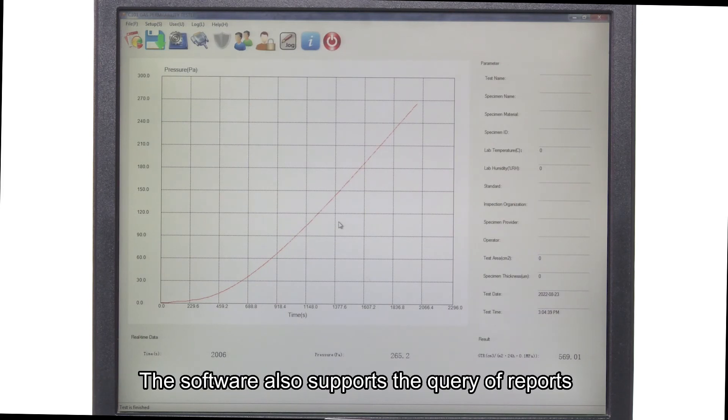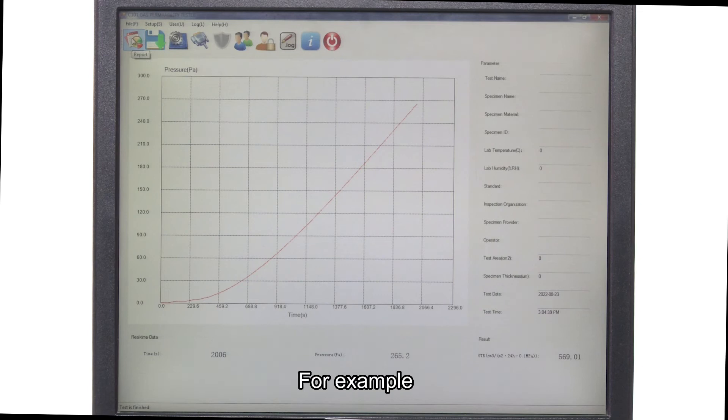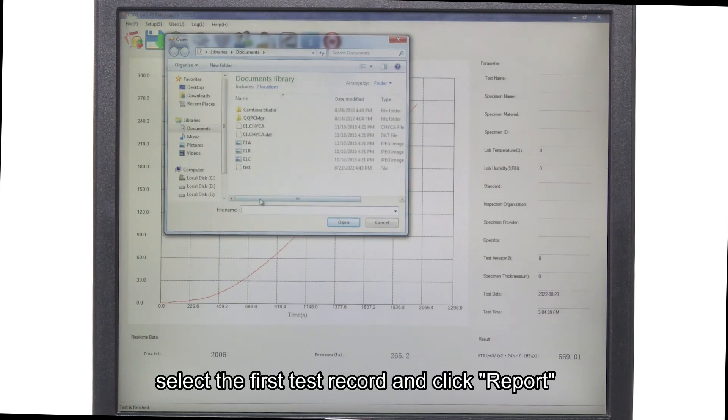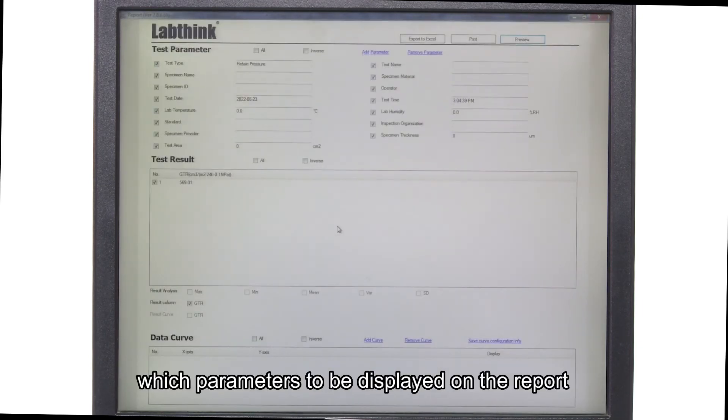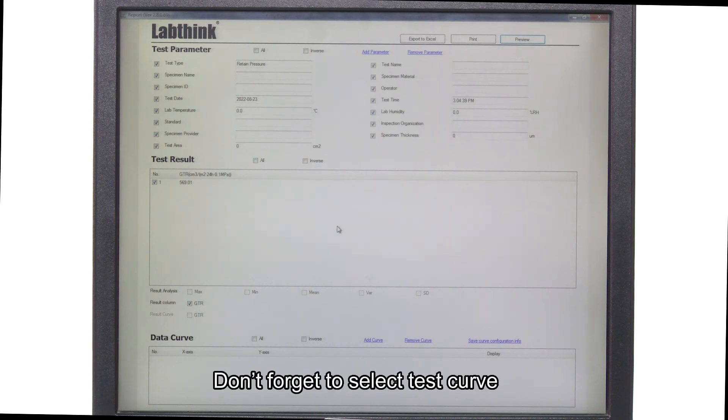The software also supports the query of reports. For example, select the first test record and click report. On the report interface, you may decide which parameters to be displayed on the report. Don't forget to select test curve if you want it to be presented on the final report.